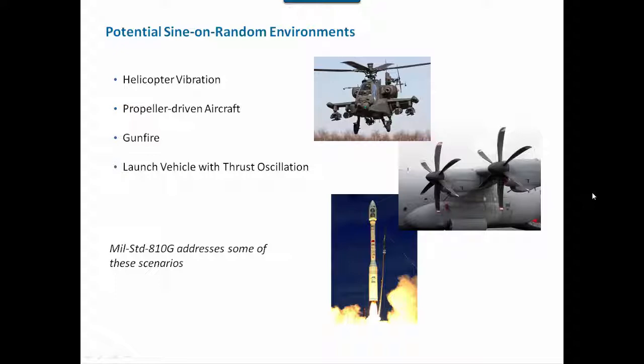Another example is propeller-driven aircraft, where a similar effect occurs. There can also be gunfire — the first three bullets are covered in MIL-STD-810G, which has various types of sine-on-random specifications depending on the vehicle, blade passing frequencies, and so on. Methods exist for determining appropriate sine-on-random test levels for gunfire as well.